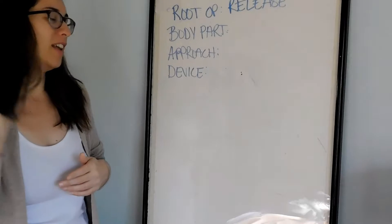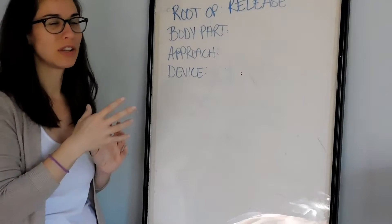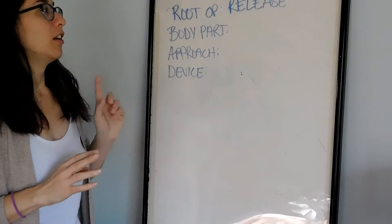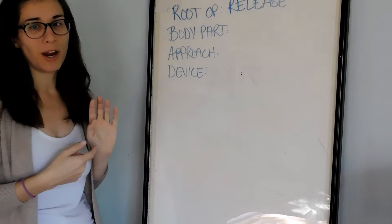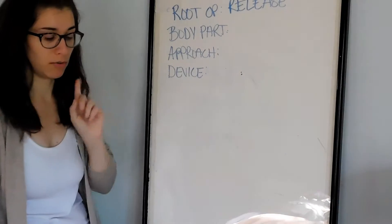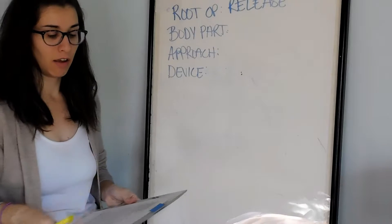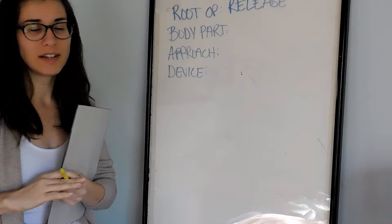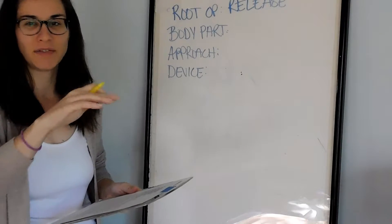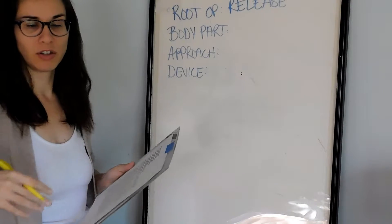Release is usually found in the spine or joints. With Release we are coding to the body part that is being released — that is being relieved of compression. Now let's actually read through our op report. I'm going to be highlighting as I go the information we will need, talking through why these areas are important and how they fit into PCS coding.